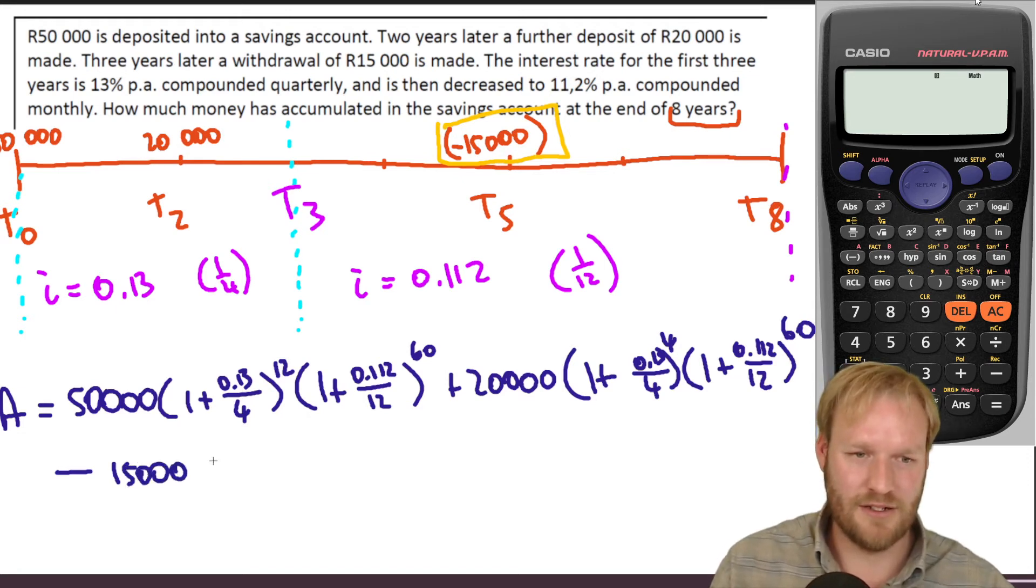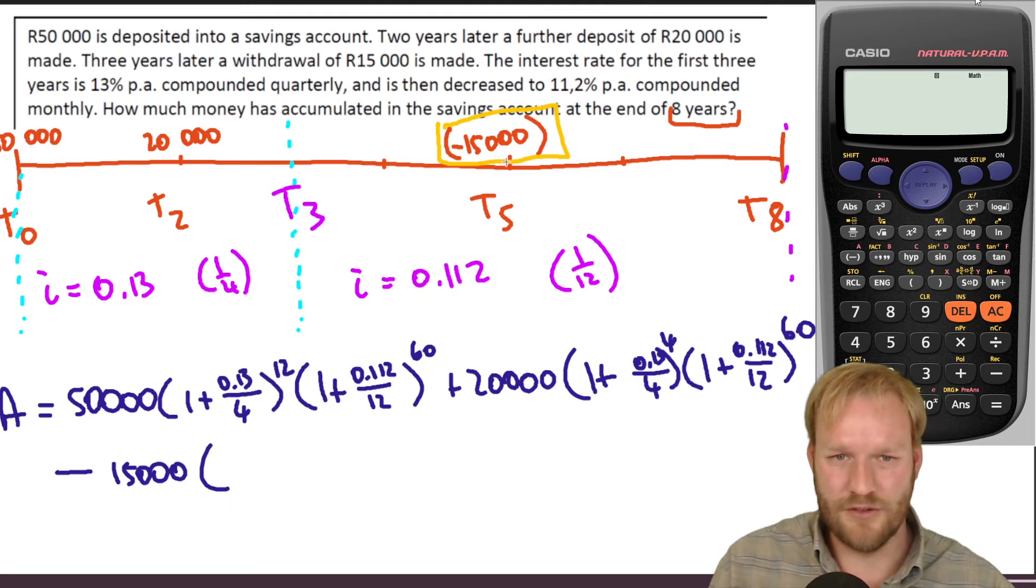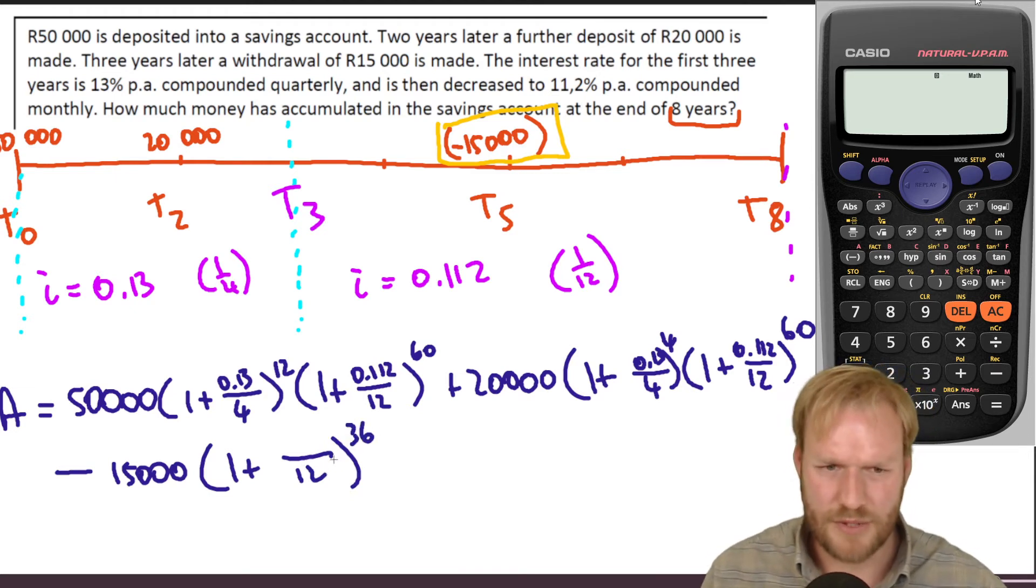And then we need to subtract this 15,000. So 15,000. Well, that 15,000 Rand would have been in here for three years, and it would have been at this percentage here, which we said was 0.112. So that's compounded monthly for 36 months. And so there's our formula.